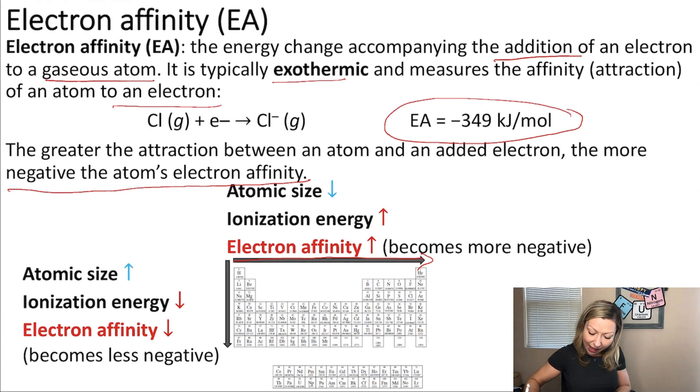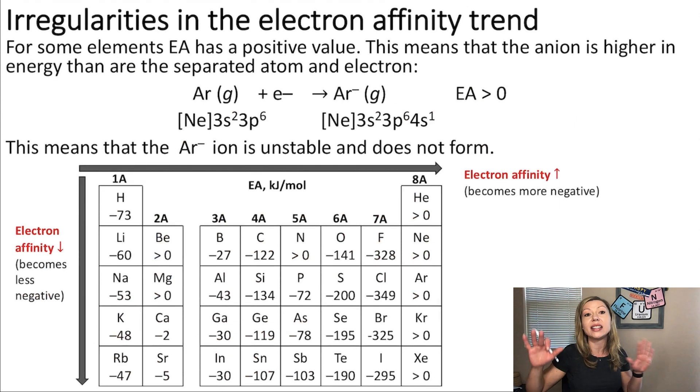On the other hand, when we go down in a group like so, the atomic size will actually increase. So, the added electron is far away from the nucleus. So, the attraction will not be that great and the electron affinity will become less negative. Let's take a look at some exact numbers.